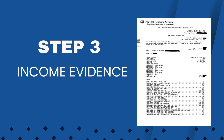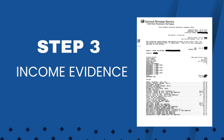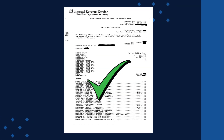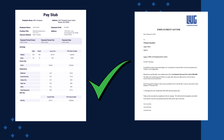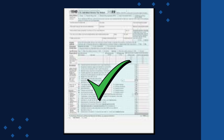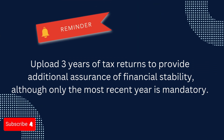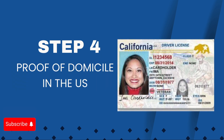Step three: Income evidence. The joint sponsor or co-sponsor must provide proof of income. Acceptable documents include: IRS tax return transcripts for the most recent tax year, preferred over regular tax returns; W-2s and 1099 forms showing a breakdown of income; recent pay stubs or an employment letter if the joint sponsor started a new job. Self-employed individuals should submit IRS Form 1040 and proof of business income, such as Schedule C or other supporting documents. Pro tip: upload three years of tax returns for additional assurance of financial stability, although only the most recent year is mandatory.